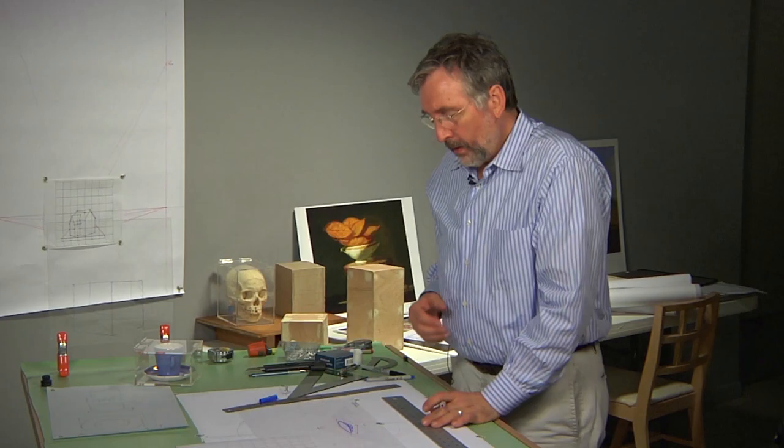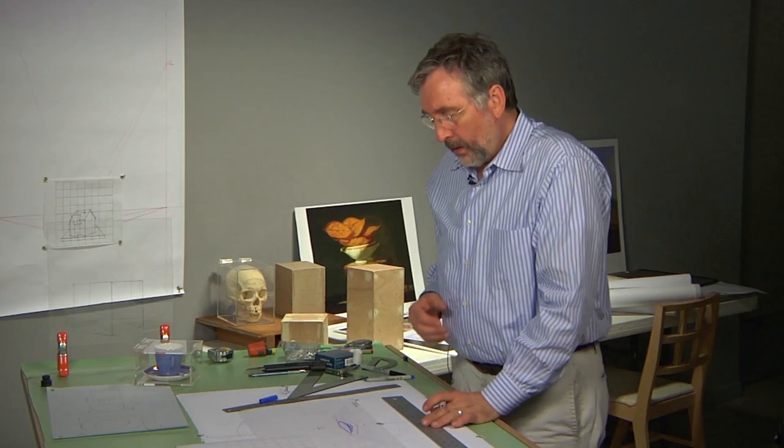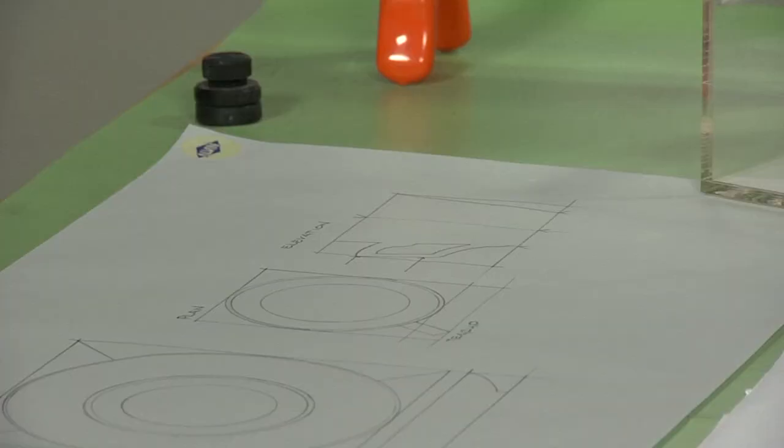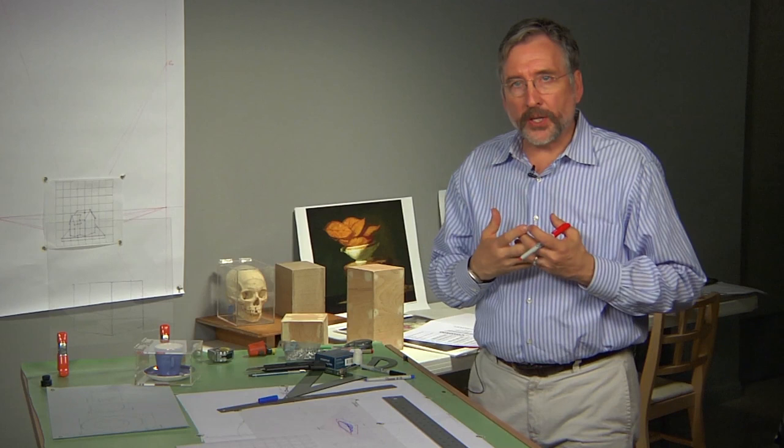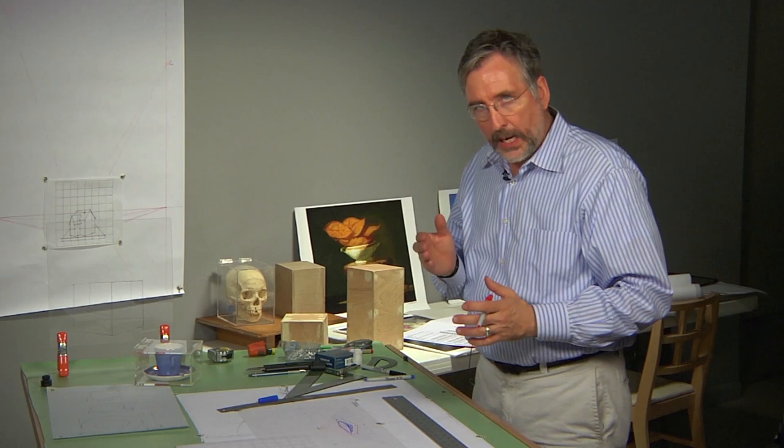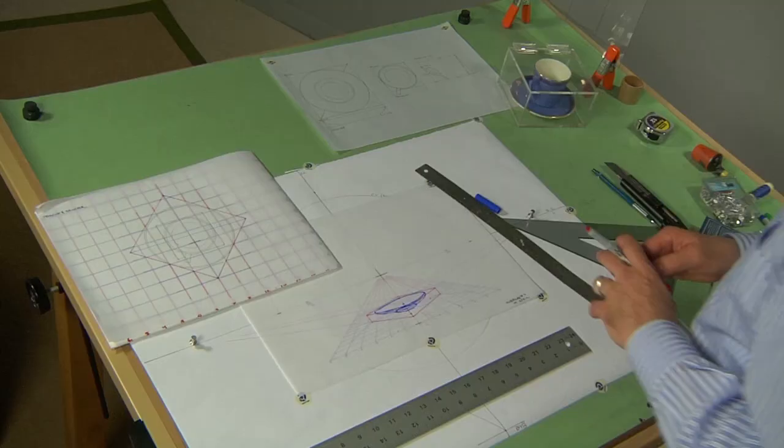So you should be getting an idea that it's not strictly just vanishing points, measure points, or I'm going to just use the grid. It's a meshing of all the above. And you're constantly thinking. And of course, the aim is space. How do I depict space? How do I make a poem about light? Because remember, that's what this is. It's a poem about light.